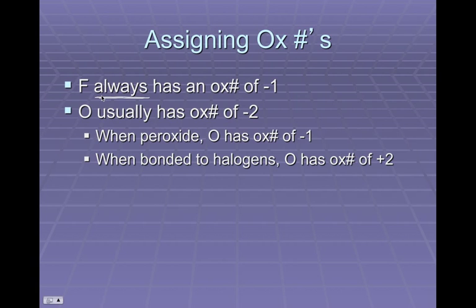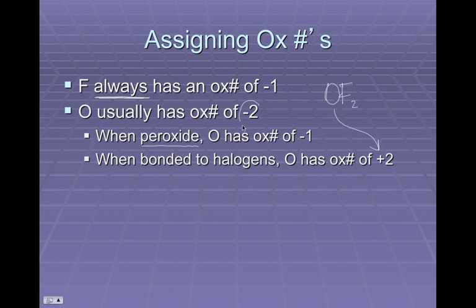Oxygen is usually going to have an oxidation number of -2, and for the most part at this level it is always -2. Whenever you see a compound named something peroxide, like hydrogen peroxide, then in that case oxygen will have an oxidation number of -1. On the rare occasion when oxygen is bonded to halogens in a binary molecular compound, that's the only time oxygen gets to be +2. For example, if oxygen is bonded to two fluorines, each fluorine is -1 — two of them — so oxygen would have to be +2. But most of the time, oxygen is going to be -2.